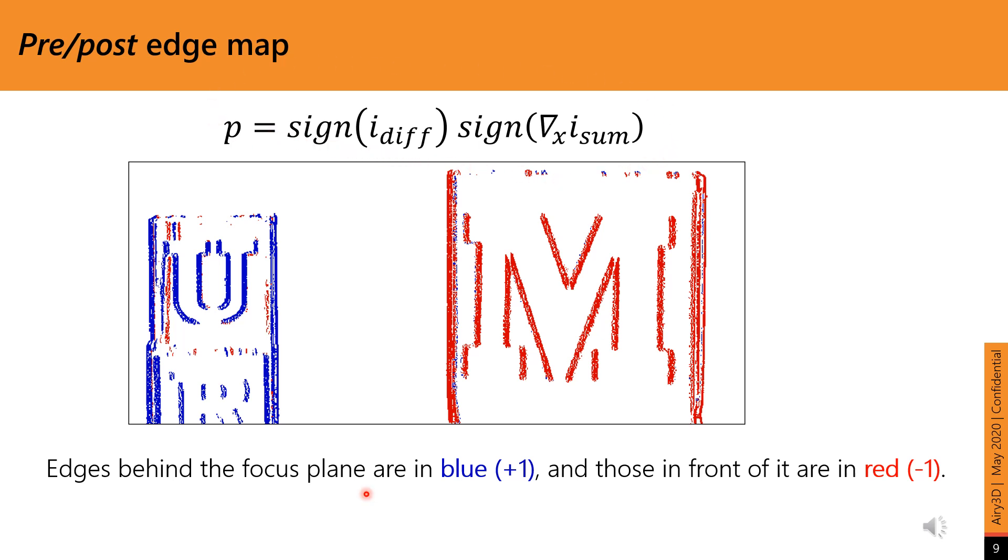So P is plus 1 when both the diff and the gradient at a given pixel have the same sign. That is, both are positive or both are negative. P is negative 1 when the diff and the gradient have the opposite signs. Note that, again, since the mask only has vertical gratings, this sensor cannot provide pre-post estimates for horizontal edges.